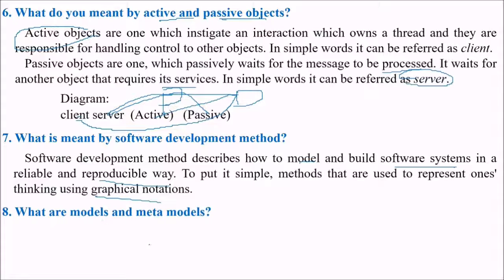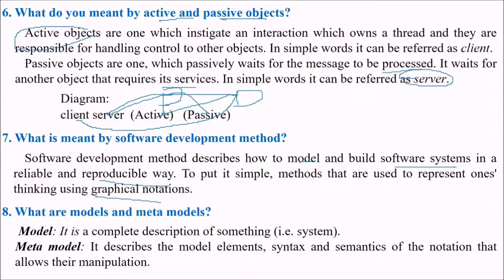What are models and metamodels? Model means it is a complete description of certain thing that is system. Metamodels describes the model elements, syntax and semantics of the notation that allows software manipulation.